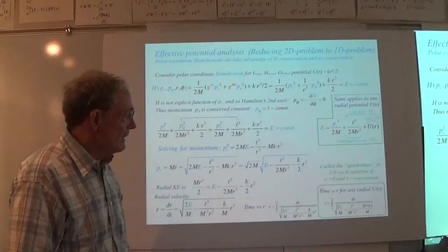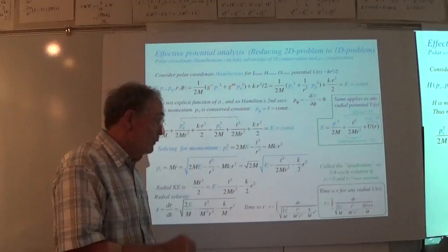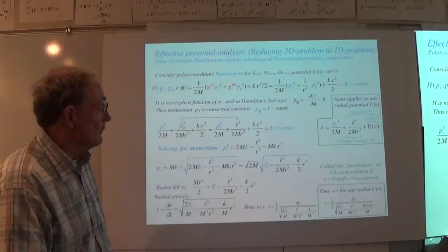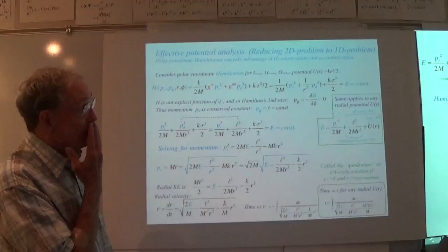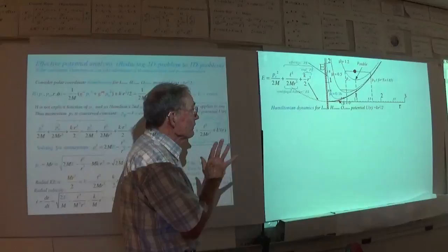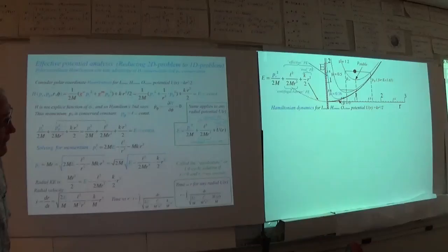Integration by quadrature — usually from the lowest to the highest point of some object — gives you the time that it took to get from a low point to a high point. Or, if you've changed the limits, from any point to any other point in principle.